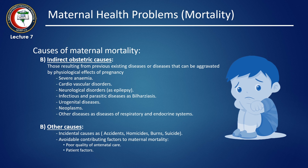Indirect obstetric causes of maternal mortality are those resulting from previously existing diseases or diseases aggravated by the physiological effects of pregnancy. They include severe anemia, cardiovascular disorders, neurological disorders such as epilepsy, infectious and parasitic diseases such as bilharziasis, urogenital diseases, neoplasms, and other endocrine system diseases.